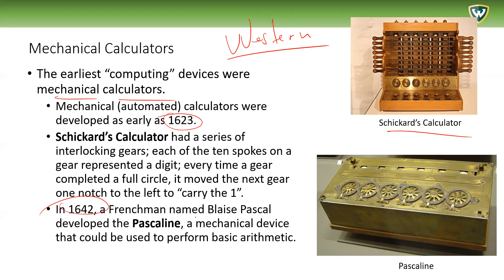In 1642, a French man named Blaise Pascal developed the Pascaline, a mechanical device that could be used to perform basic arithmetic. During the Renaissance we have these machines being developed that can do mathematical operations with just some initial input from the user. This is a western-centric view, though of course these are the correct individuals — I'm just focusing mostly on the western view here.